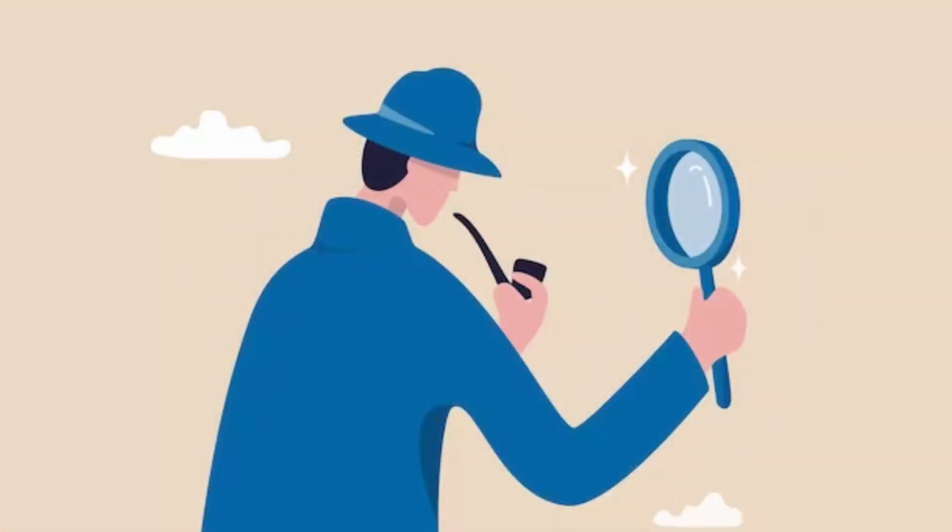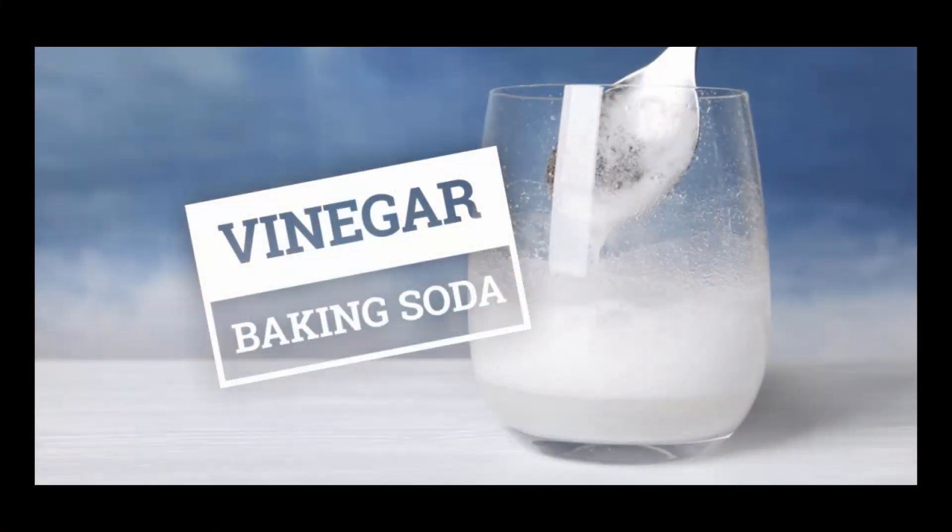Observing over time. In investigations we often need to observe changes caused by things we do. How often we need to observe depends on the changes we are looking at. We can see some changes straight away, such as the formation of a gas when we mix vinegar and baking soda.